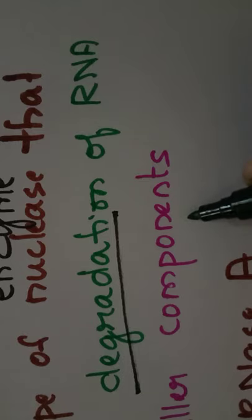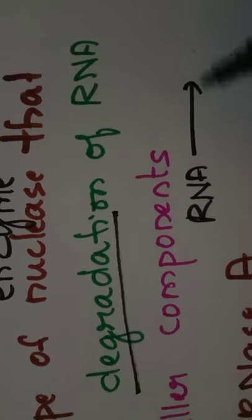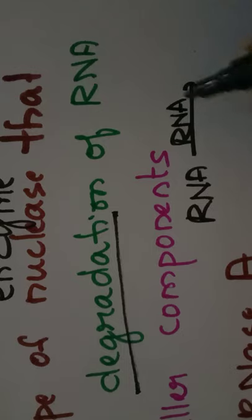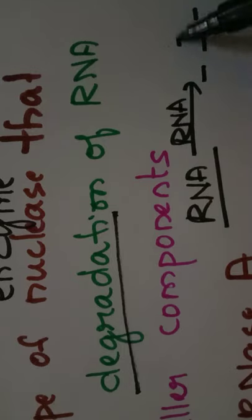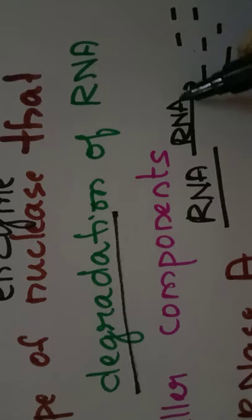For example, if we have an RNA like this, when the RNase is present, this particular RNA will be converted into small bits of components. This is known as RNase.